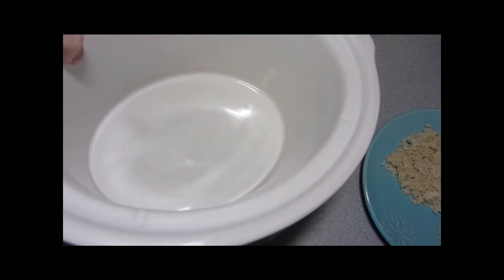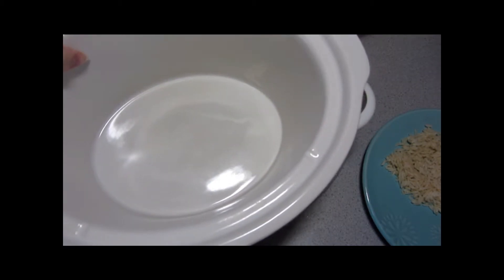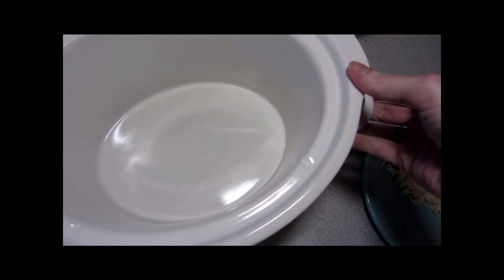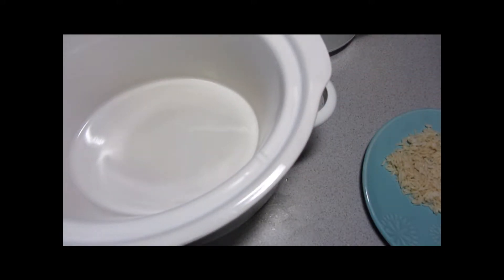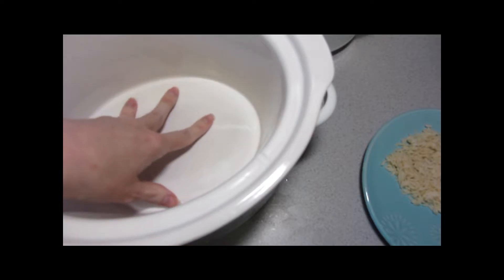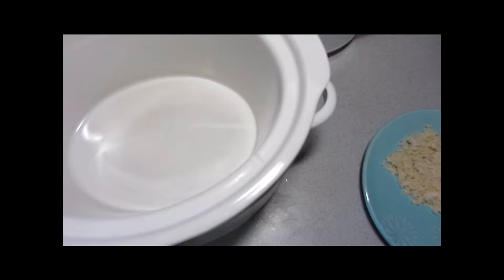The crock insert can go into a dishwasher if you have one or can be washed with hot soapy water. Just don't use any abrasive cleaners or metal sponges, and try to be careful when you're using metal utensils not to scrape too much to the sides. You don't want to damage the stoneware.